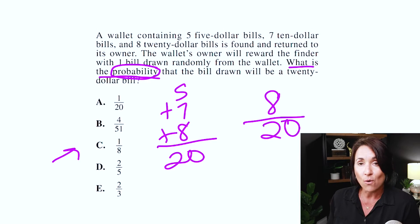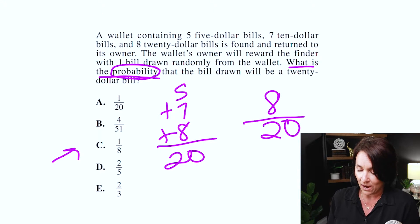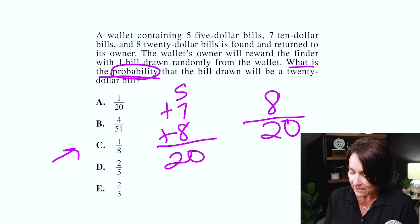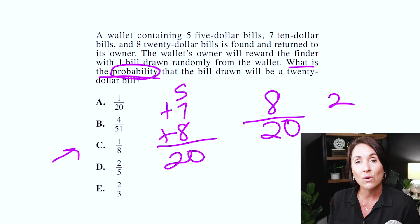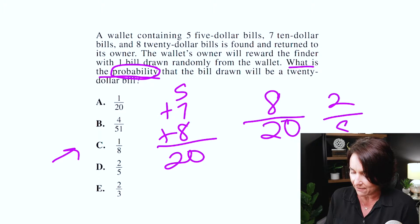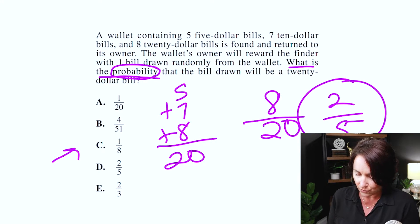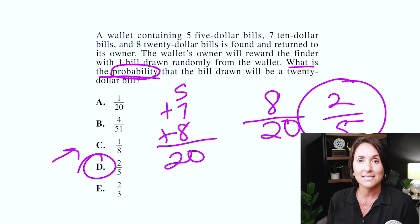How many $20 bills do I have in the wallet? I have 8. So it's 8 out of 20. Now I don't see 8 out of 20 anywhere in my answer choices because I have to reduce this fraction. 4 can go into both 8 and 20: 8 divided by 4 is 2, and 20 divided by 4 is 5. The probability is two-fifths — D.